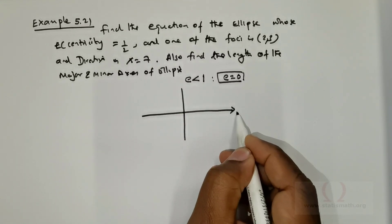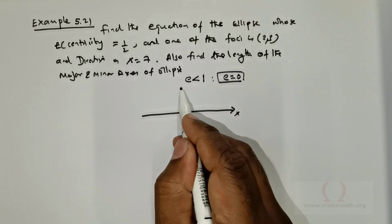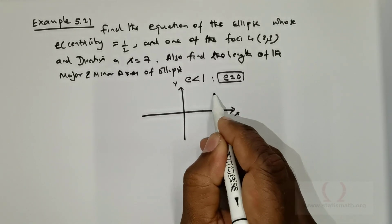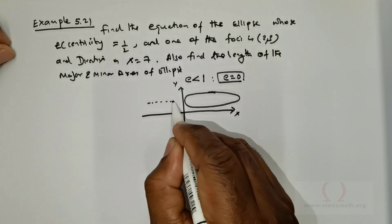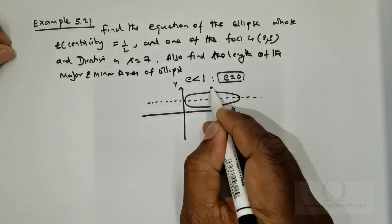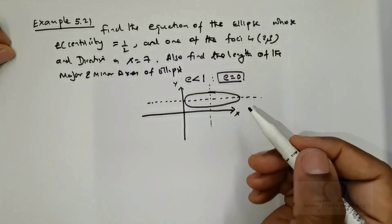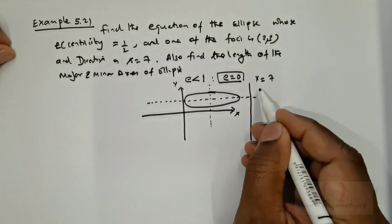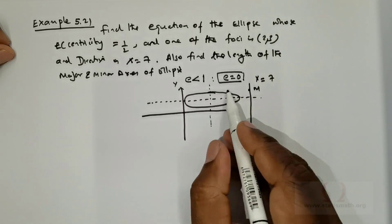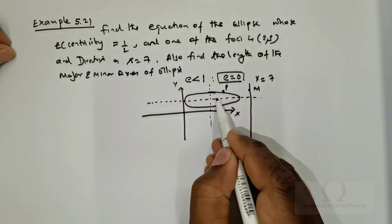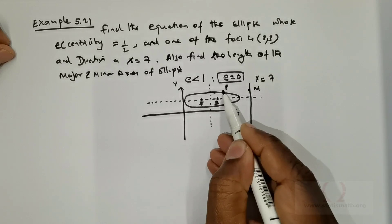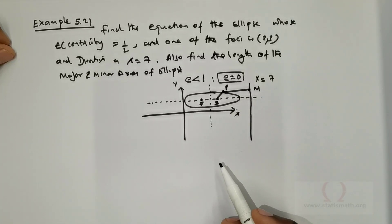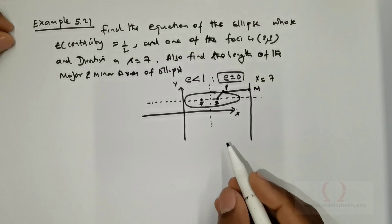What they are talking about is the following. Let us consider an ellipse — the rough sketch would be something like this. We have the axis, the directrix x = 7, a point M, a point P, and the foci S and S'. We connect P with S and P with M.